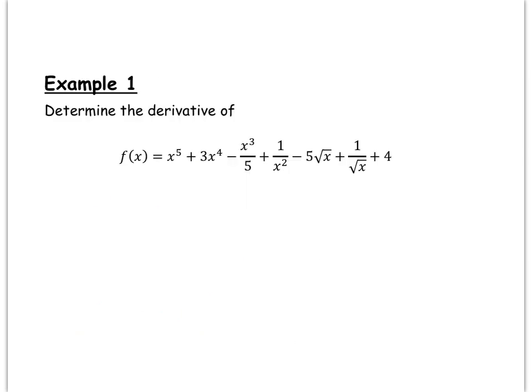Now let's look at an example combining all the shortcuts we've talked about. We're asked to find the derivative of a function that is a sum or difference of several terms. Many terms can directly use the power rule, but a few need to be rewritten first: 1 over x squared is not written as a power of x, nor are 5 root x or 1 over root x. Our first step is to rewrite the function in a form that lets us apply the power rule, constant rule, and constant multiple rule.